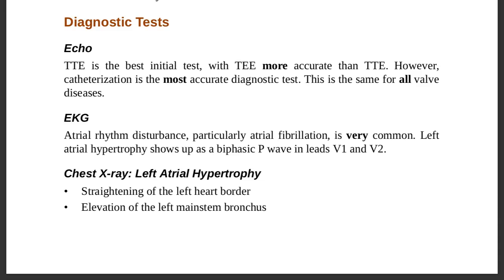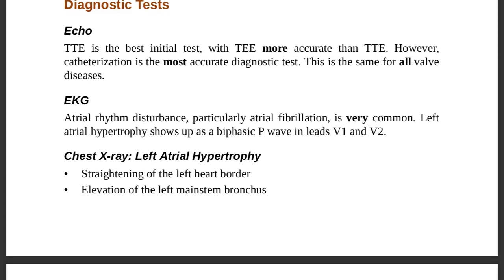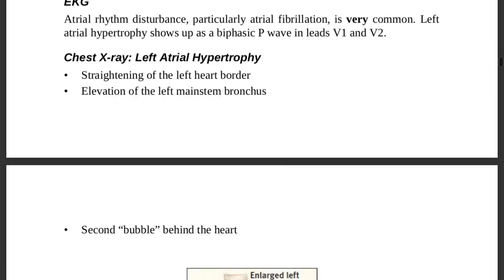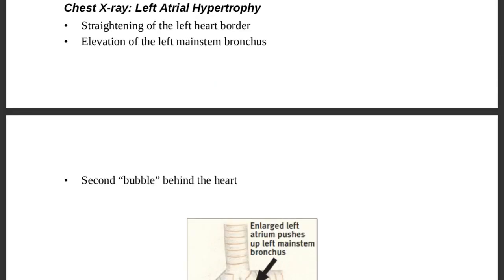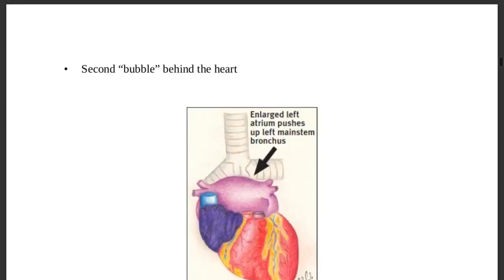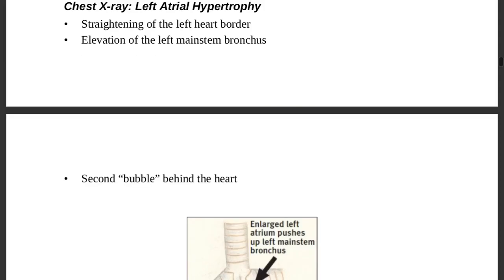On chest X-ray in mitral stenosis, you will see: straightening of the left heart border, elevation of the left main stem bronchus (due to the hypertrophied left atrium pushing it up), and a second bubble behind the heart — all suggestive of left atrial hypertrophy. The enlarged left atrium pushes up the left main stem bronchus, which is easily visible on chest X-ray.